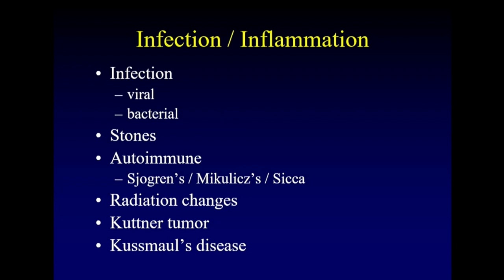Let's turn our attention now to infection and inflammation. Infection of the salivary glands can be viral or bacterial — mumps being the famous viral source and repeated bacterial infections being much more common. Calculi are often the source for repeated bacterial infections. Autoimmune disease will also cause inflammation, and we'll talk about Sjögren's disease, Mikulicz's disease, and the overarching sicca syndrome. Radiation changes often affect the salivary glands more than surrounding tissues, leaving dense glands that enhance a lot after therapeutic radiation.